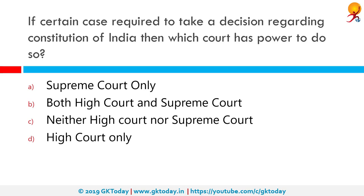If a certain case requires a decision regarding the Constitution of India, which court has the power to do so? Only the Supreme Court of India can take decisions about the Constitution. Although Parliament passed the 24th Amendment in 1971 to abrogate the Supreme Court ruling in the Golak Nath case — amending the constitution to provide that Parliament has the power to amend any part of the constitution including fundamental rights — it was later decreed that Parliament can only pass laws regarding the constitution which do not amend the basic structure of the constitution.